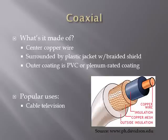Coaxial is made up of a center copper wire surrounded by insulation, then a braided shield with PVC or plenum coating on the outside.